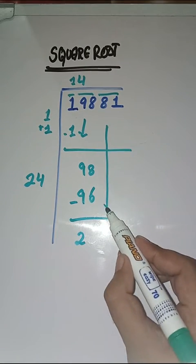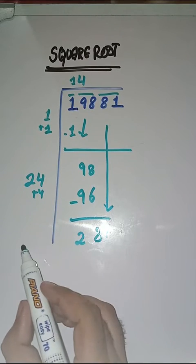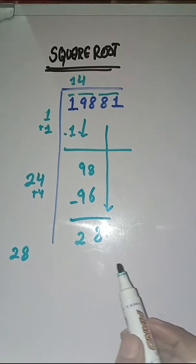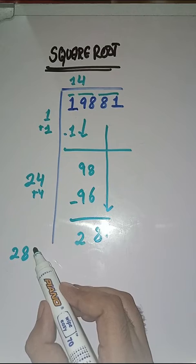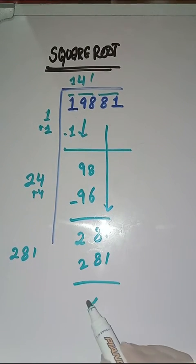Next pair is 81. We have to take it down. Here we have to get 24 plus 4 which is equal to 28. 281 ones are 281. So, this is completely solved.